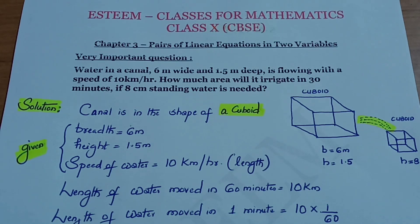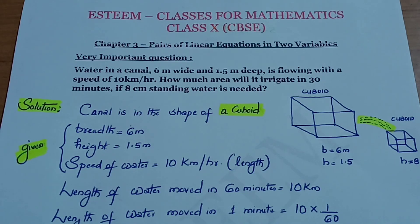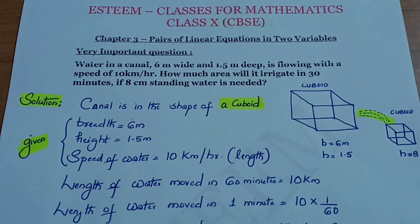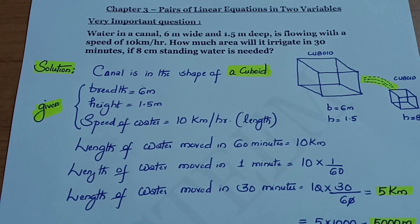The speed of water flow is 10 km per hour. The breadth of the canal is 6 meters and the height is 1.5 meters. The speed of water is 10 km per hour.